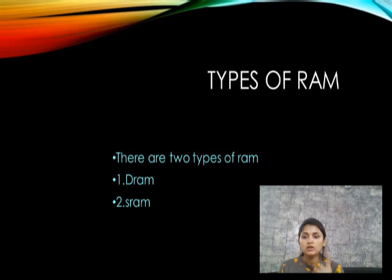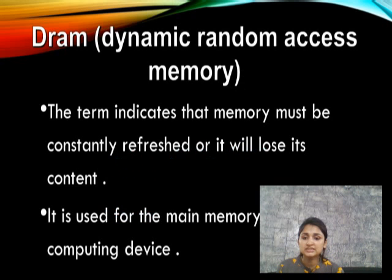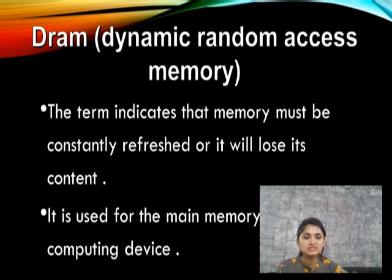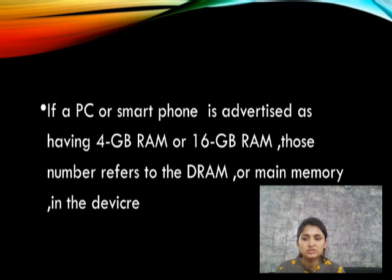RAM is of two types: first, DRAM (Dynamic Random Access Memory), and second, SRAM. DRAM indicates that it must be constantly refreshed — we need to constantly refresh the data on screen. It is the main memory of the computer device. As seen in advertisements for cell phones and PCs offering 4GB RAM, 6GB RAM, or 16GB RAM — these are all dynamic RAM, the main memory of the device.